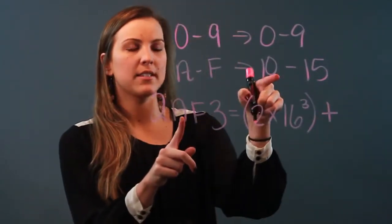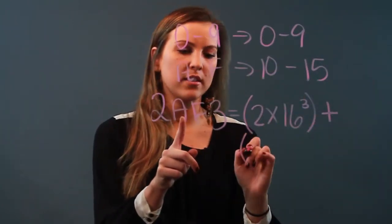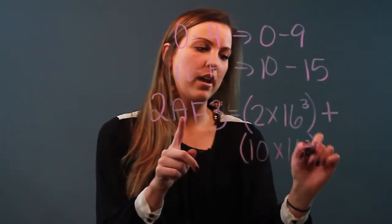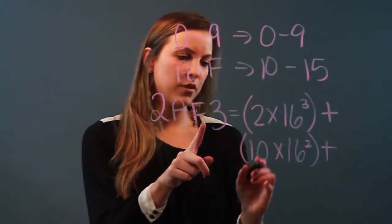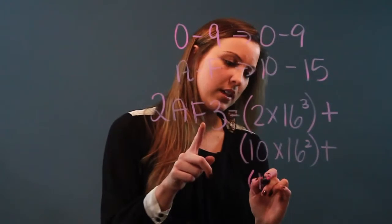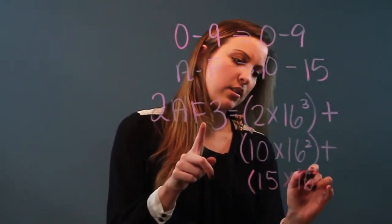A, remember A stands for the 10, so A is going to translate to 10 times 16 squared, plus F will translate to the 15, so I've got 15 times 16 to the first power,